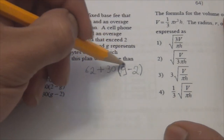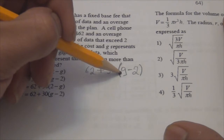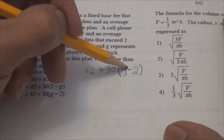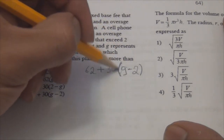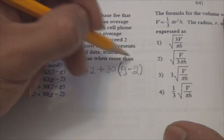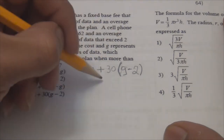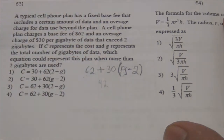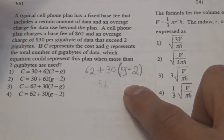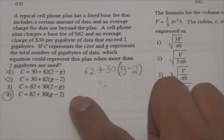If G is 3 — if I use 3 gigabytes — 3 minus 2 is 1, 1 times 30 is 30, so I'm going to end up paying $92. Only if I use 3 gigabytes, because that exceeds the 2 gigabytes. Therefore, choice number 4 is our answer.